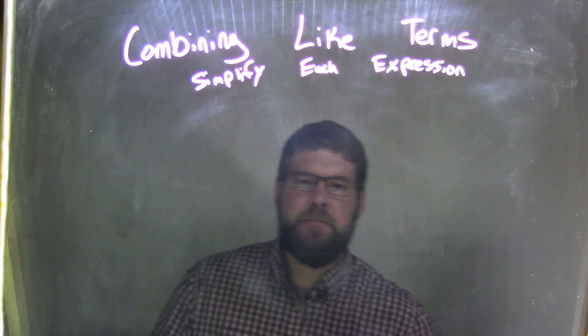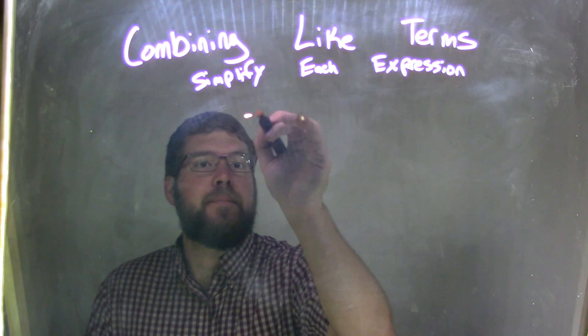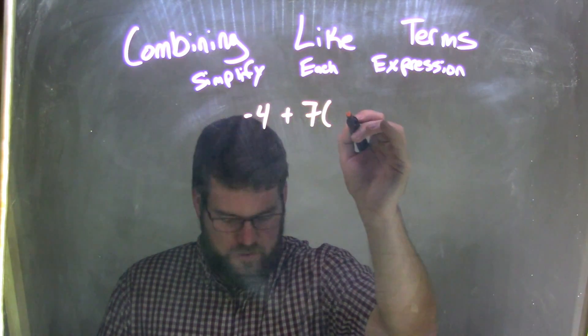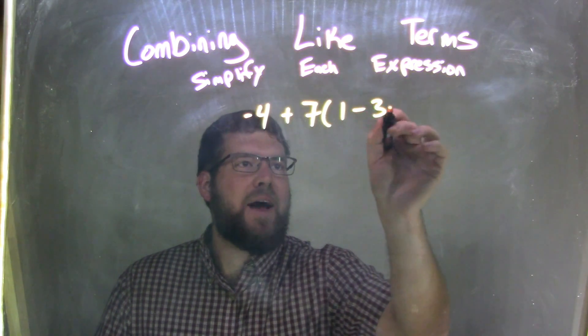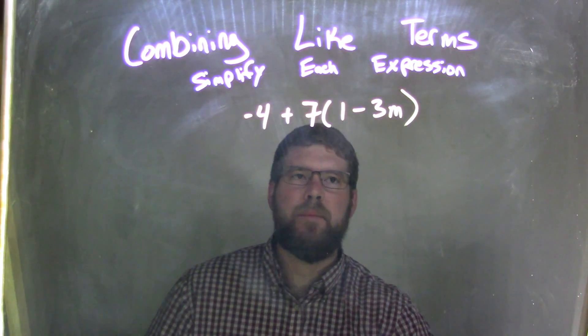And we want to simplify each expression. So if I was given this expression, negative 4 plus 7 times 1 minus 3m. Okay? So negative 4 plus 7 times 1 minus 3m.